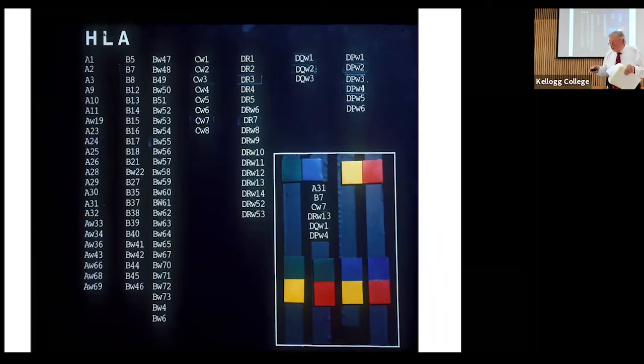That was very important because it gave the first clear indication this was the system that controls graft rejection. This is early data from Paul Terasaki, a pioneer in the field, who got together kidney graft data. You're seeing the survival of a kidney graft when the siblings are not matched versus when they are identical. There was a very striking difference. Nowadays you can diminish that by using drugs that stop the immune response to alien things. But this was a very clear indication that these genetic differences were the main ones that lead to rejection of a graft.